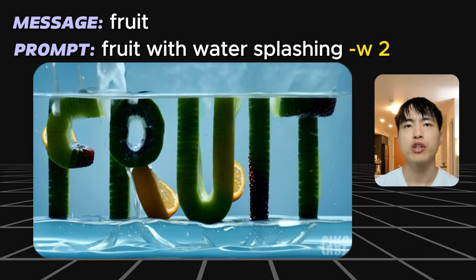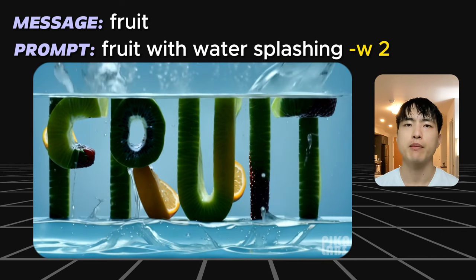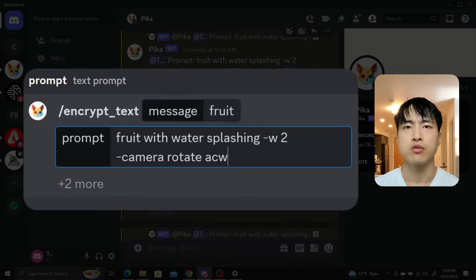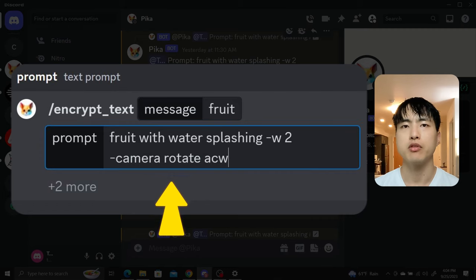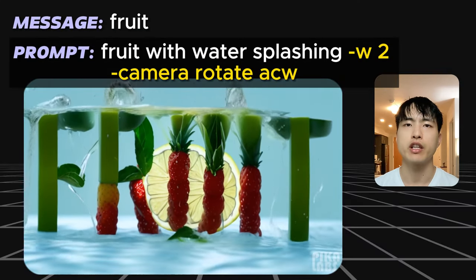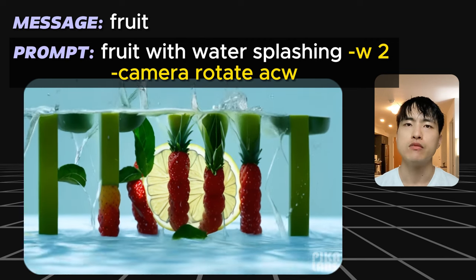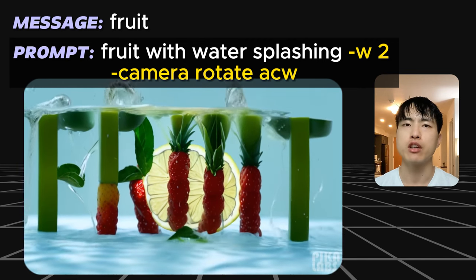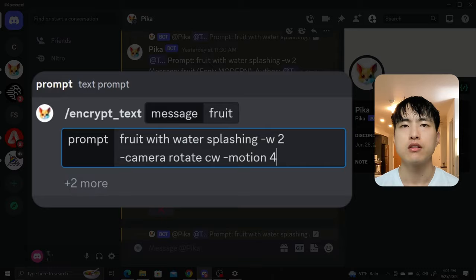To get more dynamic results, we can introduce camera motions. With our fruit theme prompt, add dash camera rotate ACW at the end of the prompt. This will generate a video with a camera rotating anti-clockwise. Keep in mind that using rotations on words can distort them sometimes.